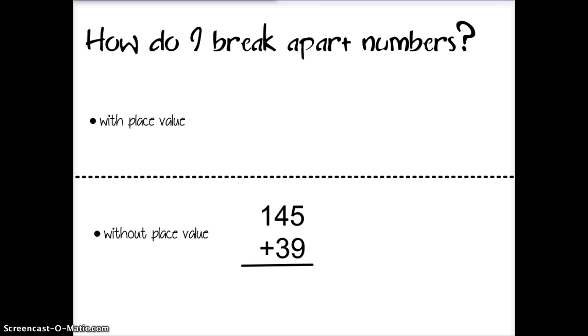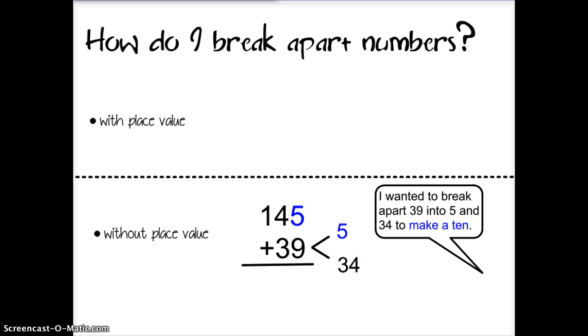Let's look at an example without place value. 145 plus 39. I'll break apart 39 into numbers 5 and 34. This is because I want to make a ten.